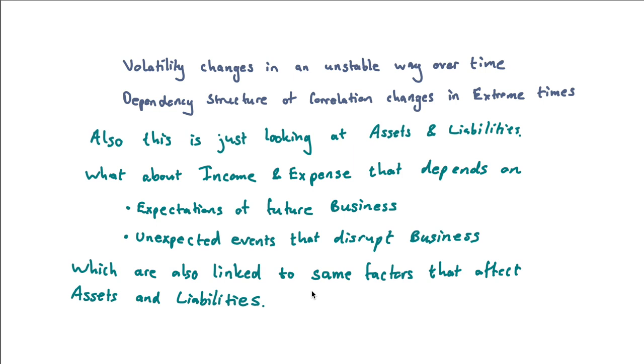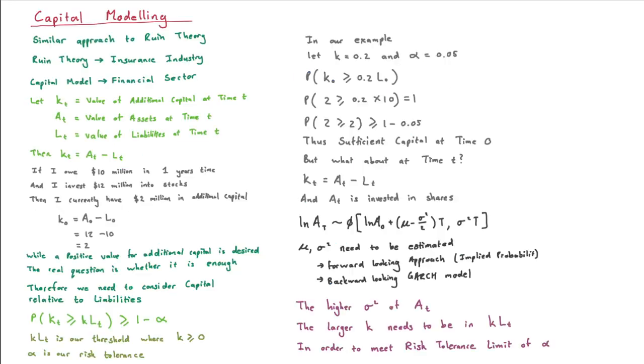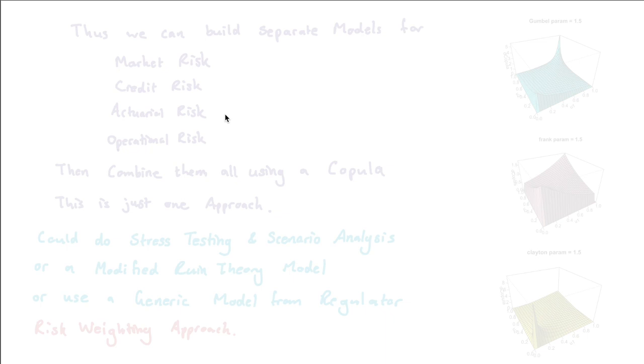We can see that we went from something very simple—I owe 10 million, I've got 12 million in stocks, how much additional capital? I've got 2 million, great. The math is nice and easy. But we see if we start looking into the future, if we start trying to model our assets and our liabilities, things do start to get a lot more crazy.